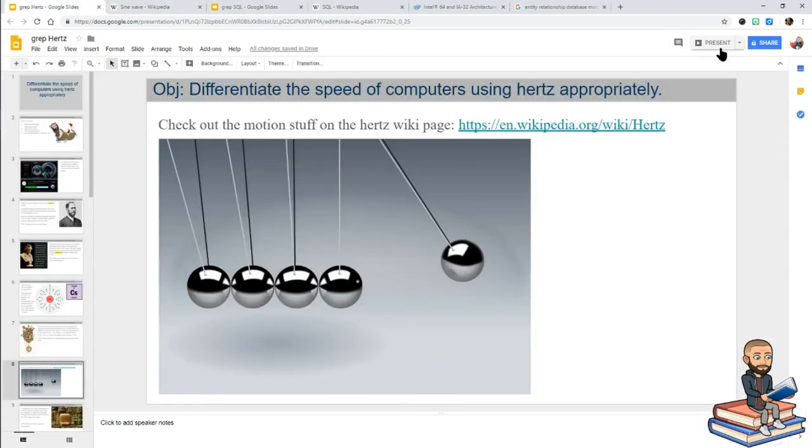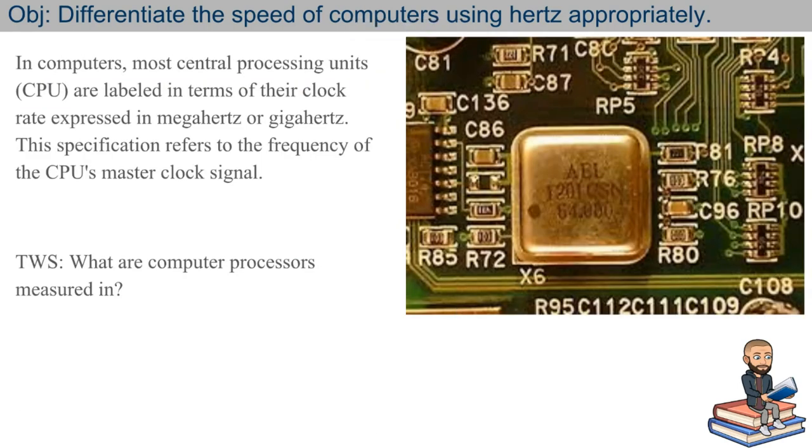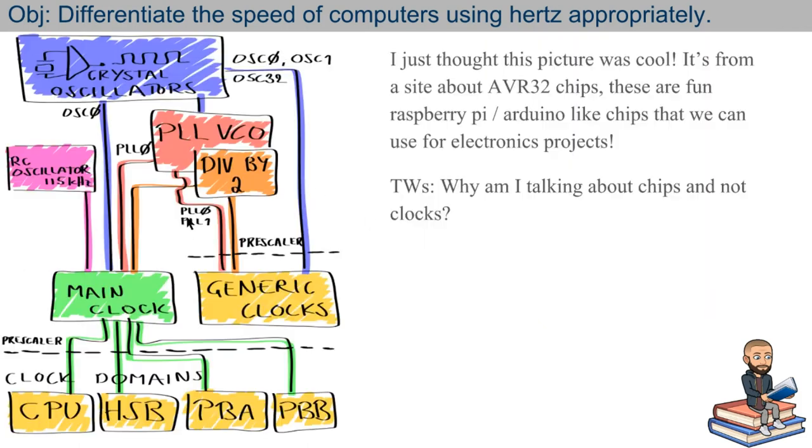But we are not talking about sound. We are talking about hertz in relation to computers. So most central processing units, they are labeled in terms of their clock rate, which is either expressed in megahertz or gigahertz. This specification refers to the frequency of the CPU's master clock signal. So it was always ironic to me to think about this because the clock is not located inside the CPU. However, a lot of people try to judge CPUs based on the clock. I suppose it's because of the things that are going on in the CPU, they are so important that people wonder about the clock, how the clock is relating to it.